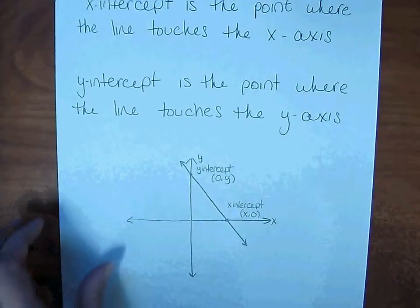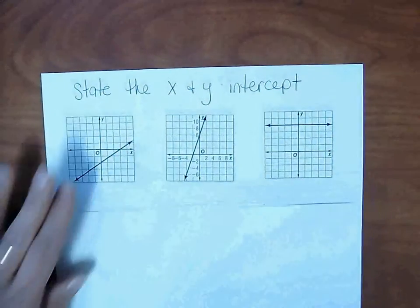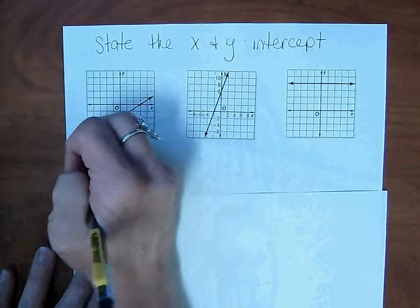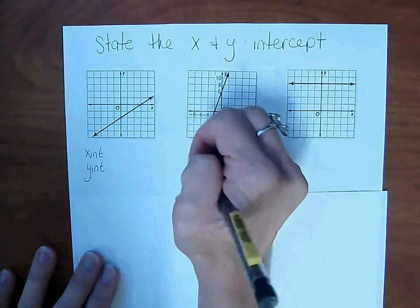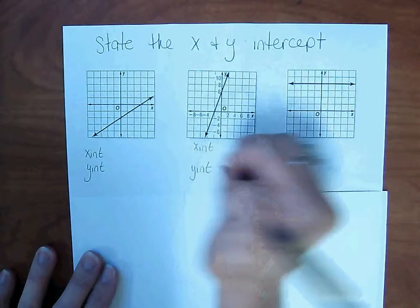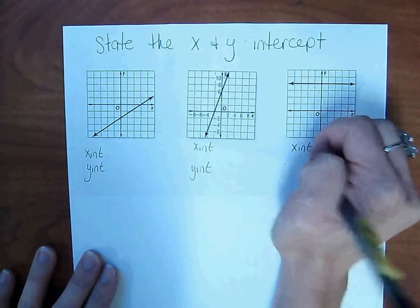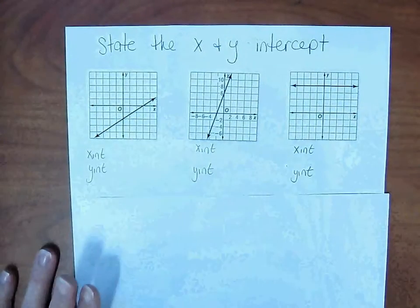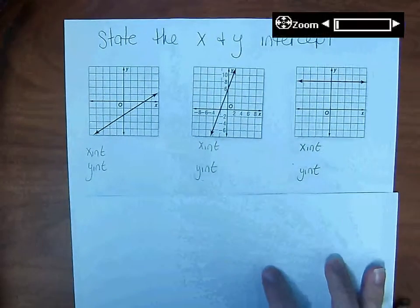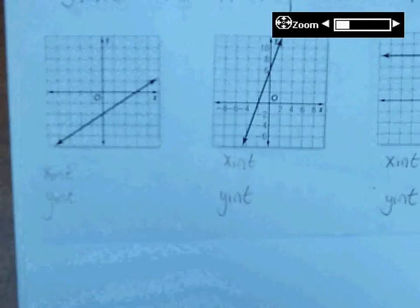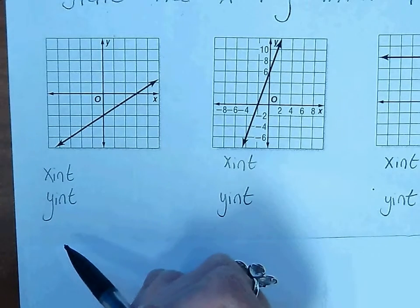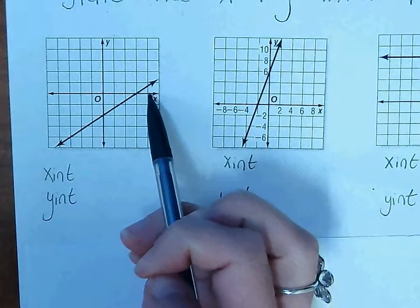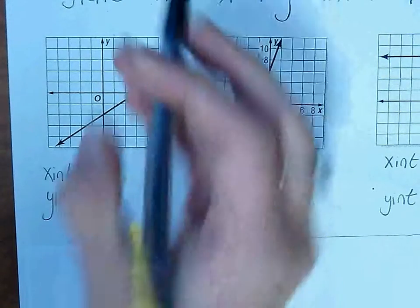So let's look at some graphs and find the x and y-intercept. So under each one of these, I'm going to label x-intercept and y-intercept. So for our first graph, I'm going to go ahead and zoom in a little bit so you can see a little bit better. X-intercept, remember, is where the line touches the x-axis. So find the x-axis, find the line, so right here.